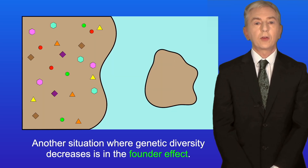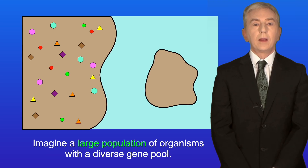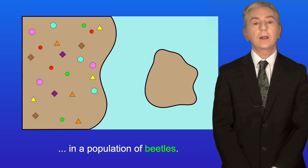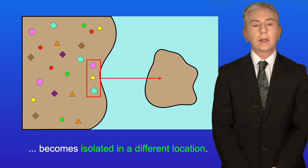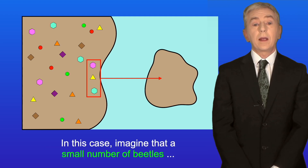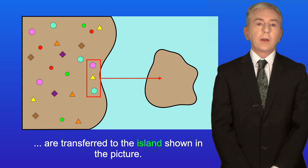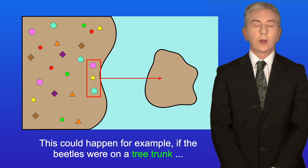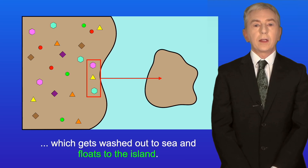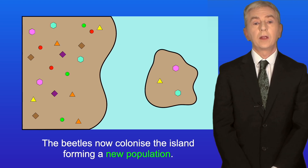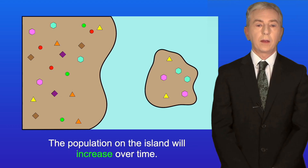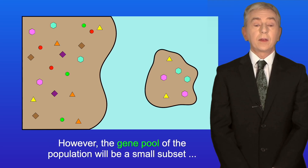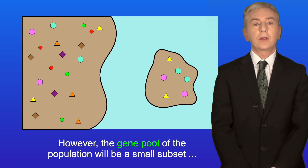Another situation where genetic diversity decreases is the founder effect. Imagine a large population of organisms with a diverse gene pool — for example, a population of beetles. In the founder effect, a small group becomes isolated in a different location, such as a small number of beetles transferred to an island — perhaps on a tree trunk washed out to sea. The beetles colonize the island forming a new population that is small with a very limited gene pool, which is only a small subset of the mainland gene pool.